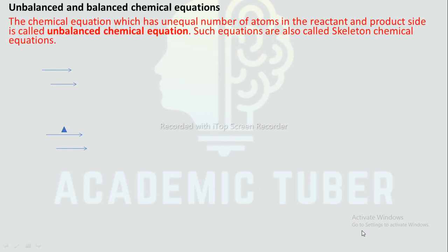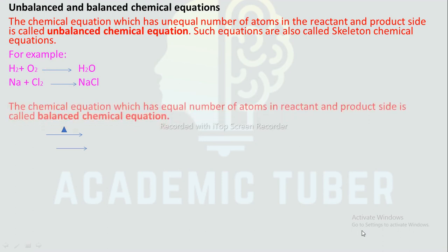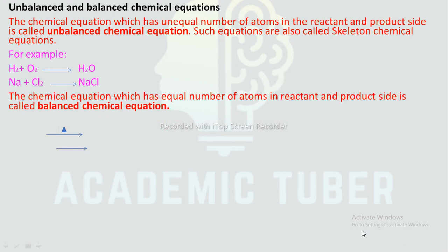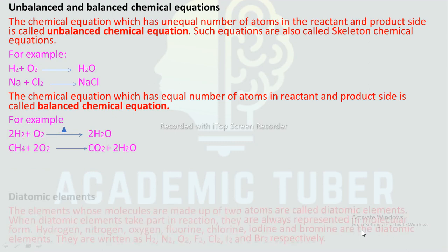Unbalanced and balanced chemical equation: A chemical equation which has an unequal number of atoms in the reactants and products side is called an unbalanced chemical equation, also called a skeletal chemical equation. For example: H₂ + O₂ → H₂O; Na + Cl₂ → NaCl. A chemical equation which has an equal number of atoms on both sides is called a balanced chemical equation. For example: 2H₂ + O₂ → 2H₂O; CH₄ + 2O₂ → CO₂ + 2H₂O.